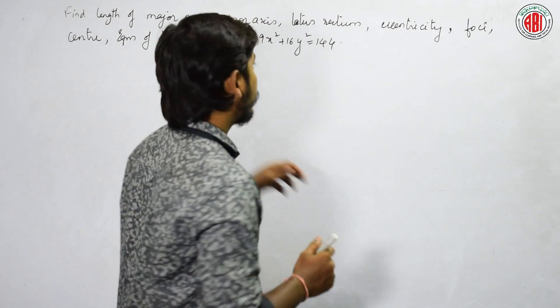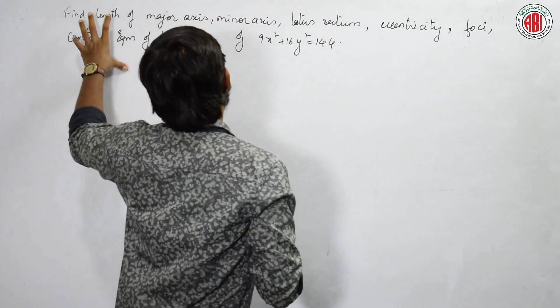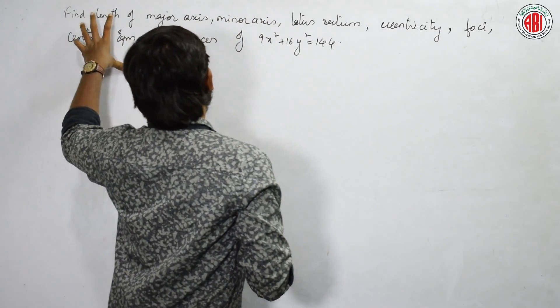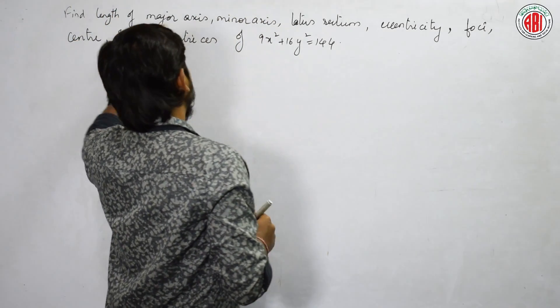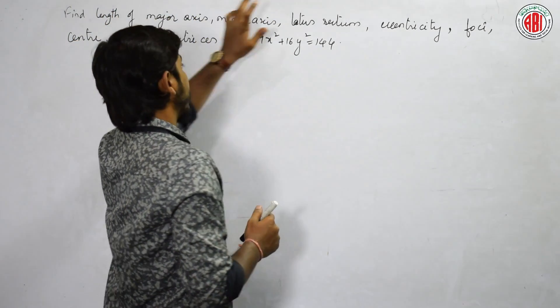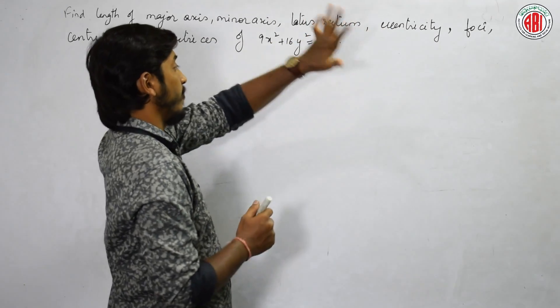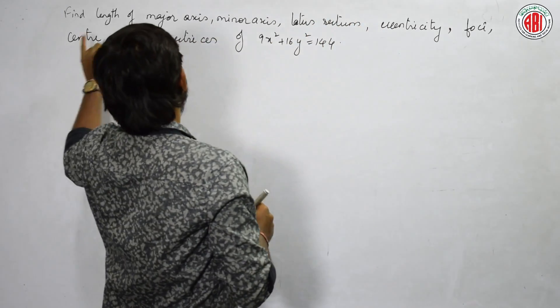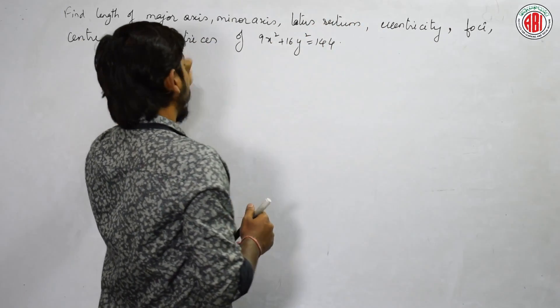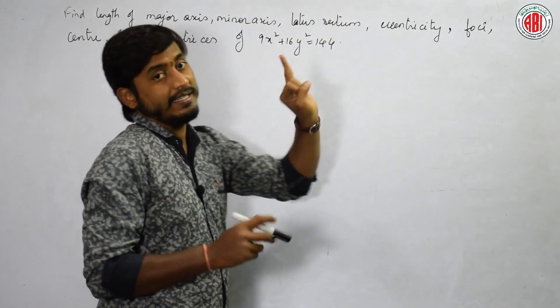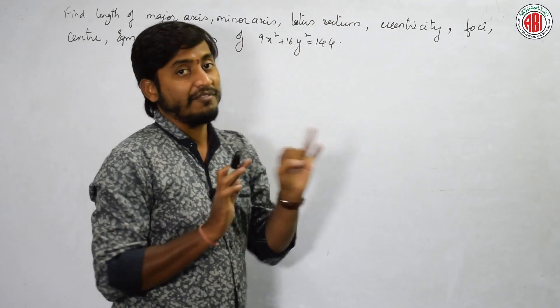The question given here asks us to find the length of major axis, minor axis, latus rectum, eccentricity, focus, center, and equation of directrices — these seven things we have to find.